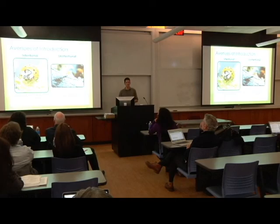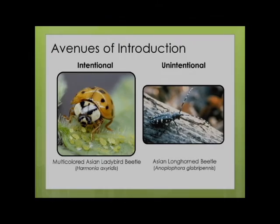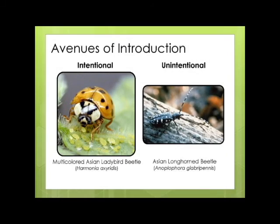I want to talk about two types of introductions: intentional and unintentional. We introduce non-native species all the time — it's called classical biocontrol. The multicolored Asian lady beetle has been introduced into the United States in many places as a voracious aphid eater to control agricultural aphid pests. We also release it in Virginia to control larval gypsy moth populations. But it has detrimental effects: it's the one that comes into your house this time of year, and it's out-competing a lot of native species.